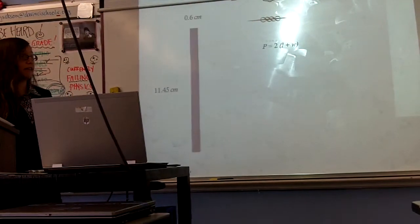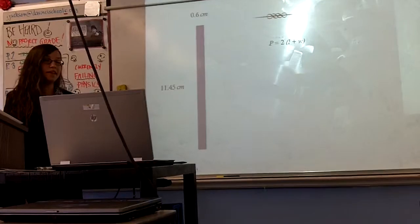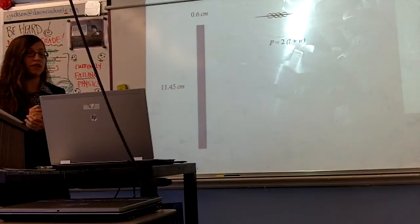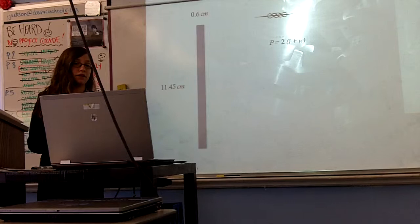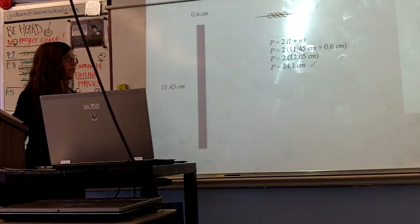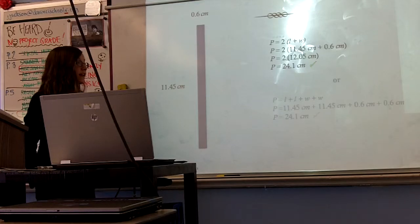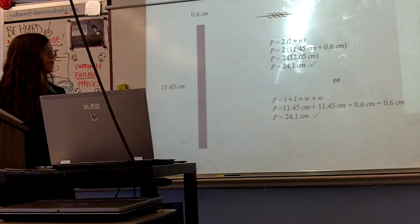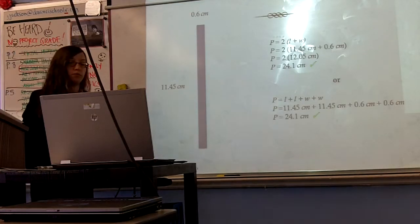I'll use the mast of my boat from my advertisement. The length of this rectangle is 11.45 centimeters and the width is 0.6 centimeters. When we plug those numbers in, we get a perimeter of 24.1 centimeters. This can also be seen as 11.45 plus 11.45 plus 0.6 plus 0.6 equals 24.1 centimeters.